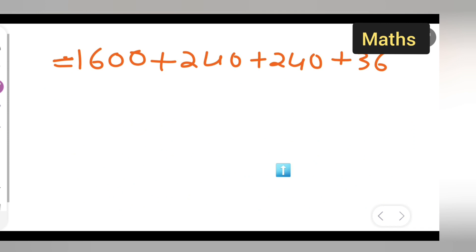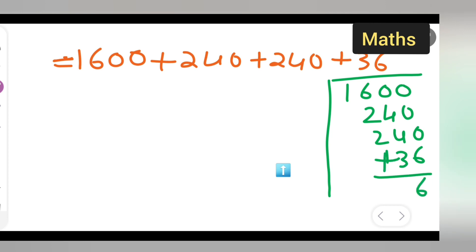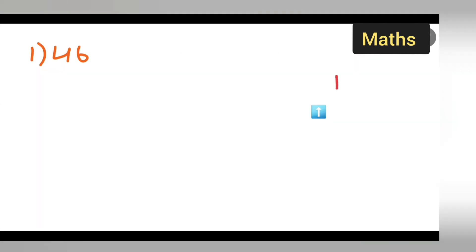Now add all these numbers: 1600 plus 240 plus 240 plus 36. Adding them all together gives 2116. So the answer is 2116. Now moving towards the next method.